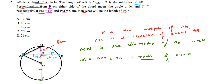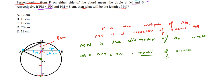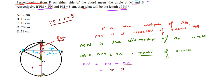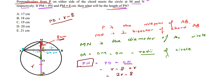Now we need to find length PN. From the diagram, PN equals PO plus ON. ON is the radius r. PO can be written as: since OM is radius and PM is 8 centimeters, PO equals r minus 8. Therefore PN equals (r minus 8) plus r, which equals 2r minus 8.